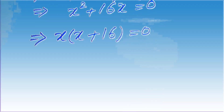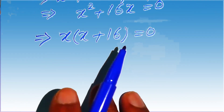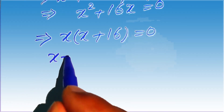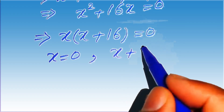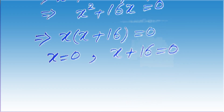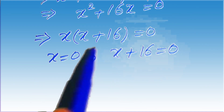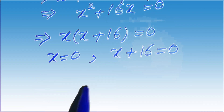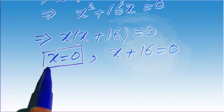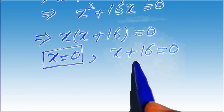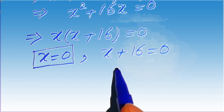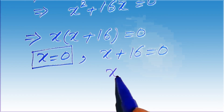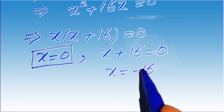We break this into two cases: x equals 0, and x plus 16 equals 0. The first solution is x equals 0, and moving plus 16 to the right-hand side gives the second value x equals minus 16. From both methods, we get the same values of x.